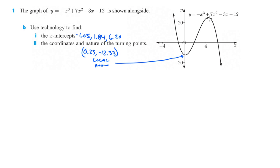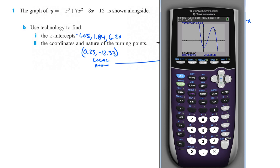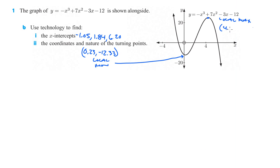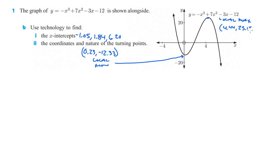That's this point right here, the local minimum. Then we can find the local max. We do second trace, find the maximum, which is number four. We start right here — push enter for left bound, then press and hold until it gets past the top and is definitely coming back down. Push enter for right bound. It's going to look for the highest y-value in this range, and it's at 4.44, 25.15. That's our local max.